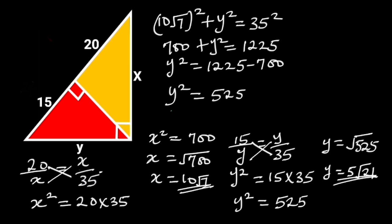Taking the square root of both sides will give us y is equal to square root of 525, which is equal to 5 root 21.